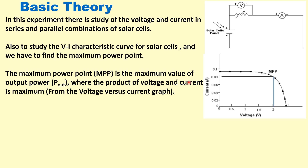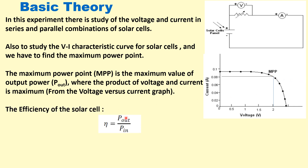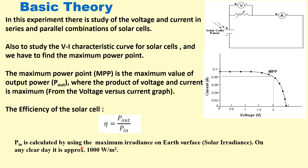The maximum power point is the maximum value of output power P_out, where the product of voltage and current is maximum. From the IV curve graph, this corresponds to the maximum area rectangle, giving the maximum power point. The efficiency of the solar cell is defined as η = P_out / P_in. P_in is calculated using the maximum solar irradiance on Earth's surface, which on any clear day is approximately 1000 W/m². So P_in equals irradiance multiplied by the area of the solar cell.